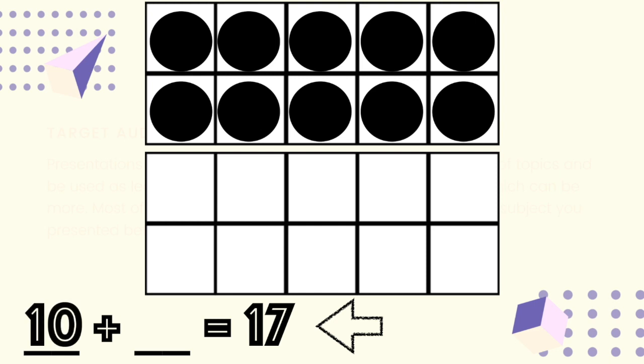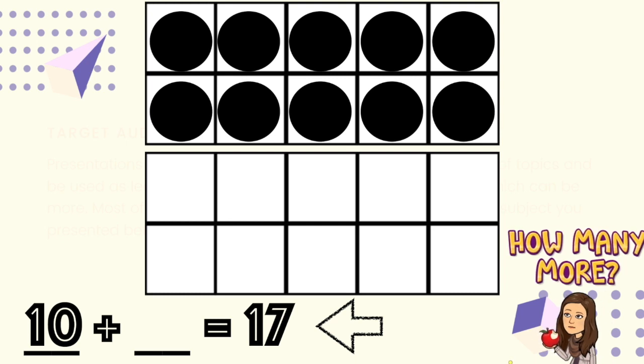The next thing I need to do is figure out how many more will get me to 17. To do this, I'll start by counting at 10 and count on as I add one counter at a time, like this.